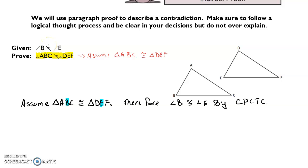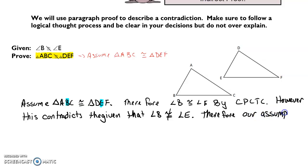That's our absurdity. That's the thing that we have to point out in our paragraph. So right away now, I can go ahead and say, however, this contradicts the given that angle B is not congruent to angle E. Therefore, our assumption must be false.